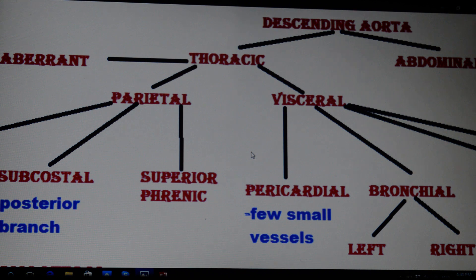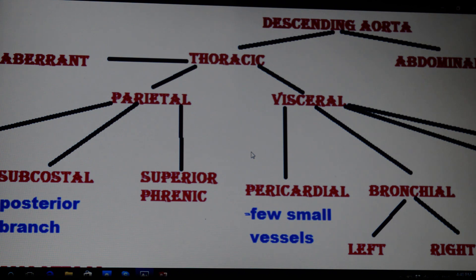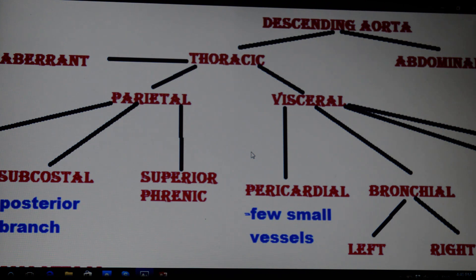Hello guys, my name is Bhargav and I'm back with another video. Today we are going to discuss the thoracic aorta. Starting from the descending aorta, it gives off two branches: thoracic and abdominal. The thoracic aorta is located in the posterior mediastinal cavity from the fourth thoracic vertebra to the twelfth thoracic vertebra, where it continues through the diaphragm as the abdominal aorta.